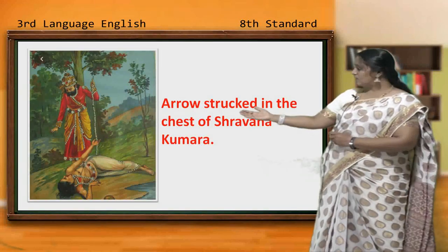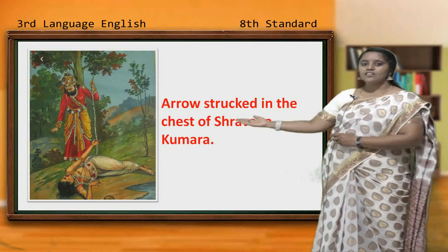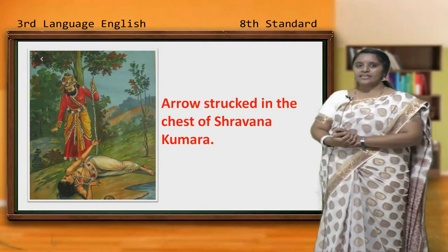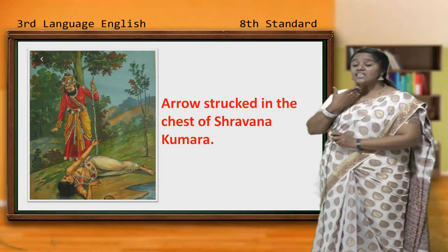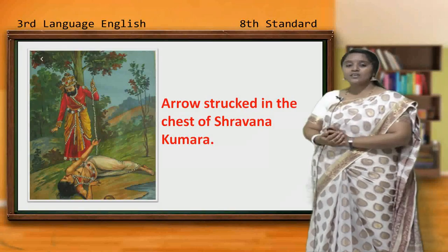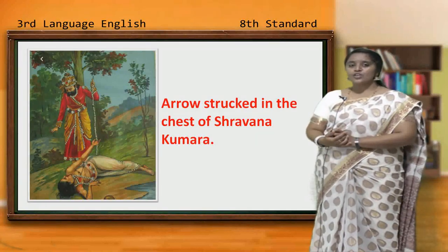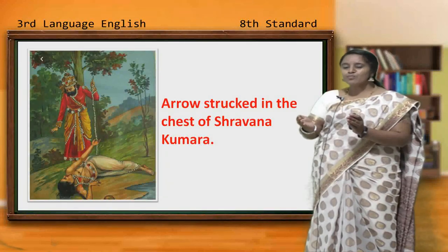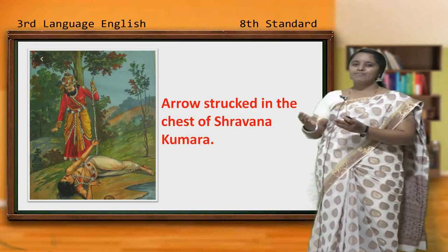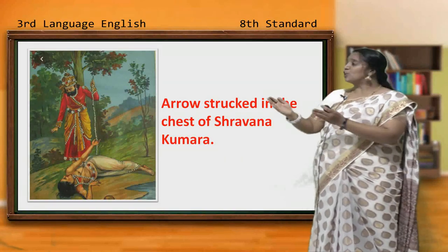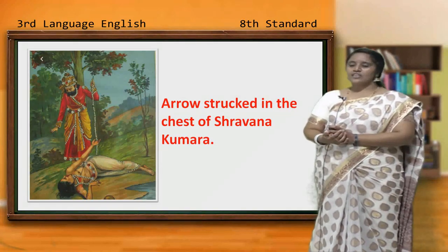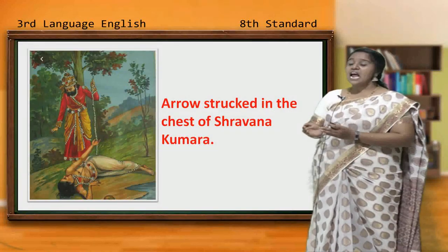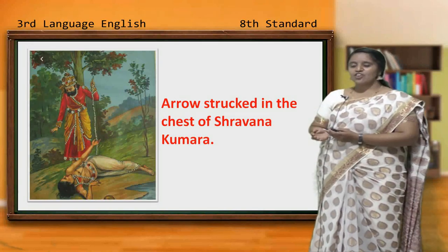Even in that pain, with blood coming, even in that great pain, Shravana Kumara was worried about his parents. He was thinking of his parents. He requested King Dasaratha, 'Please, could you take this water to my parents? They are blind.' After telling that, as soon as Dasaratha took the pot from Shravana Kumara, Shravana Kumara died. We will see the next part in our next lesson.